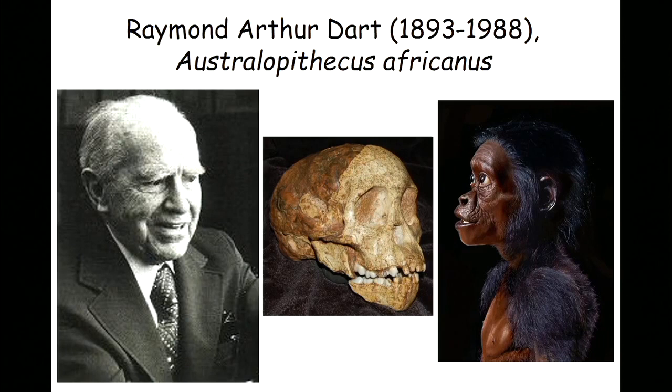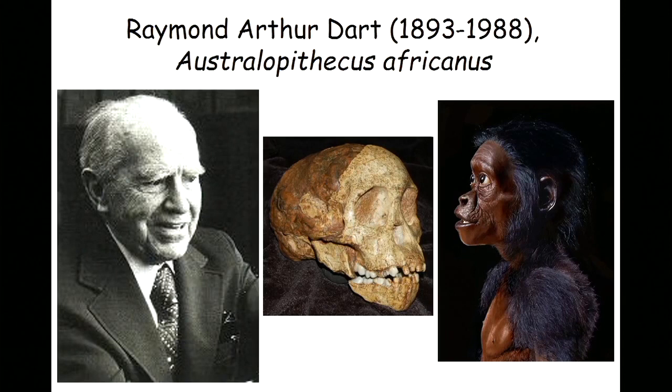He knew right away that he had something the likes of which had never been seen before. It happened to be an infant or a young child, but it was transitional between an ape and humans in terms of its features. The teeth were human-like to a degree. The forehead looked human-like — there wasn't a brow ridge — but the nose looked ape-like. And the size of this brain was absolutely ape-like; it's about the size of my fist — little, tiny, ape-sized.